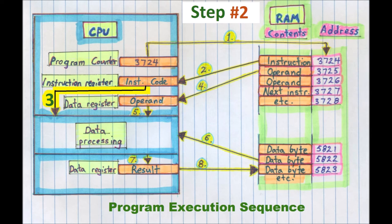The data to be processed, called operands, are fetched from the following locations in RAM via the data bus, in the same way as the instruction.